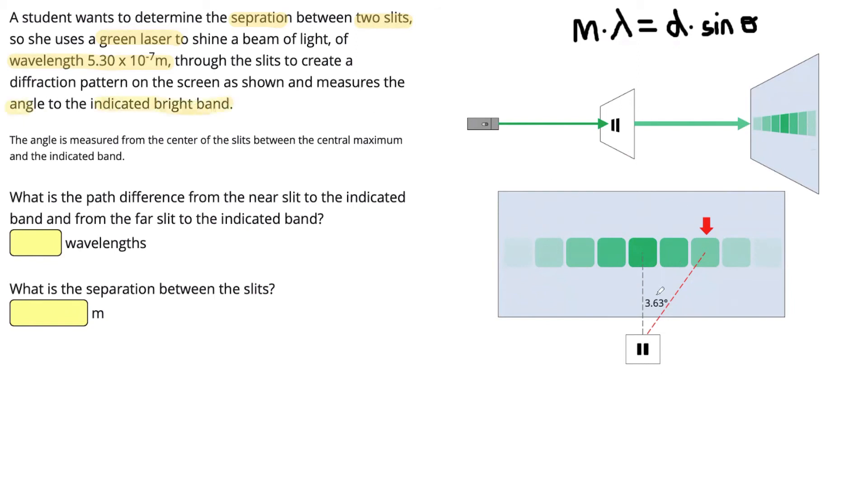Then she measures the angle to the indicated bright band. So looking at our diagram, she has measured the angle here to this band. So based on what we know about the band numbers, this here would be our number one bright band. This here is our number two. So our M in our equation is going to be two.